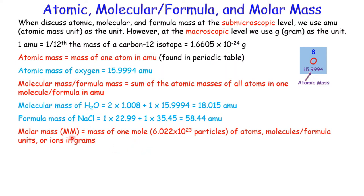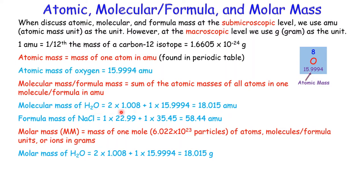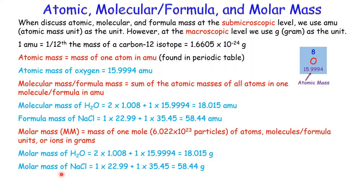Now comes molar mass. Molar mass is the mass of one mole of particles — that is, the mass of Avogadro's number of particles. The molar mass of water is 18.015 grams per mole — the same numerical value as its molecular mass but in grams. Similarly, the molar mass of sodium chloride is 58.44 grams per mole.